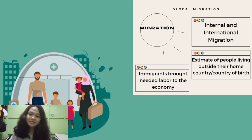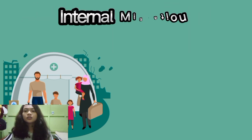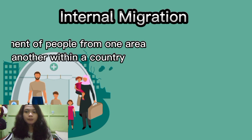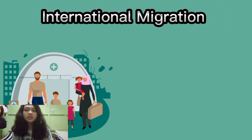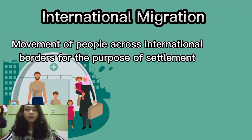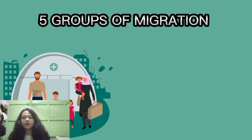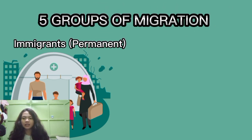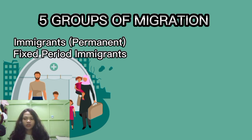There are two types of migration: internal migration, which refers to people moving from one area to another within one country, and international migration, in which people cross borders from one country to another. International migration can be further broken down into five groups. First are those who move permanently to another country — these are what we call immigrants. Second are workers who stay in another country for a fixed period of at least six months to a year.